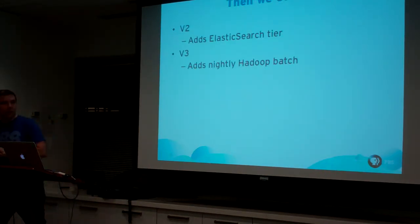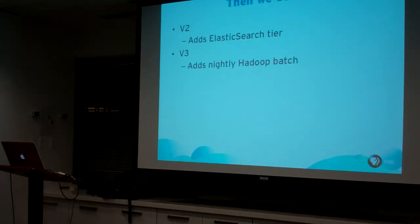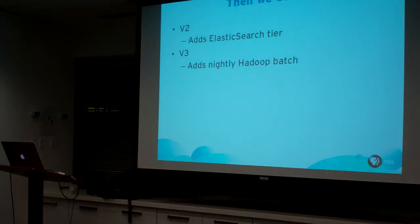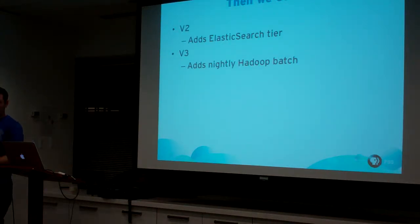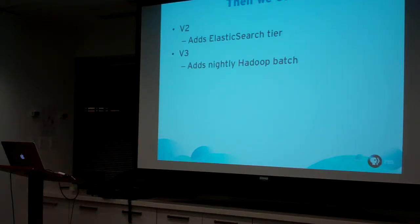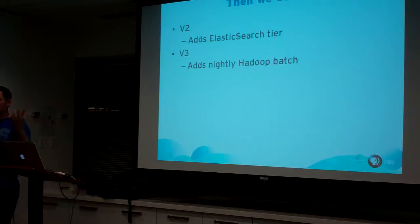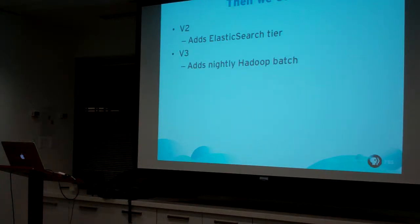Even worse, you evolve. Your CEO comes in saying you need fast full-text search, so you add Elasticsearch. Then he hears about big data at a conference and wants to crunch numbers. So now you have an evolution of your architecture — last year it was just that first slide, and now there's more stuff that keeps happening.